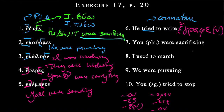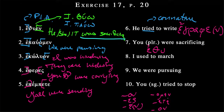'You plural were sacrificing.' Sacrifice — we had it up here: THUO. So we get our root 'thu,' put the past indicative augment on. Then 'you plural' is going to be 'y'all' essentially, so the ending is 'ete.' The result is ETHUETE — disyllabic, short. So: 'y'all were sacrificing.'